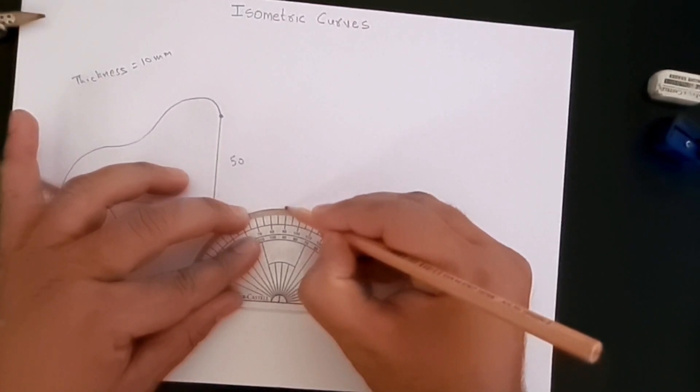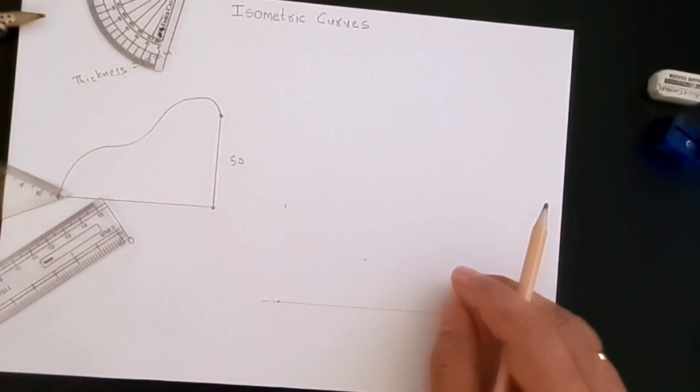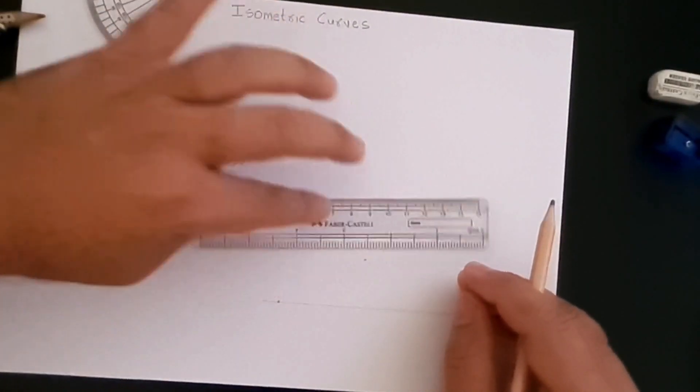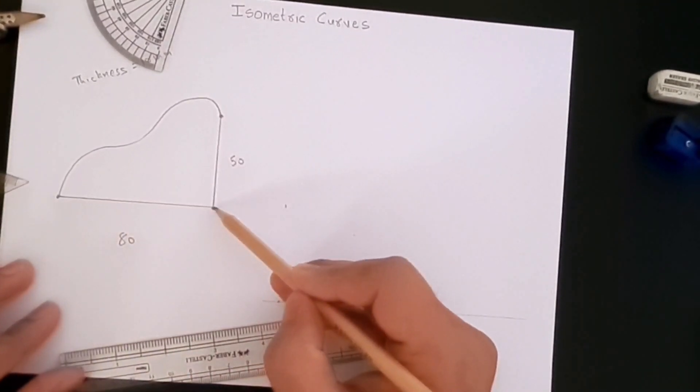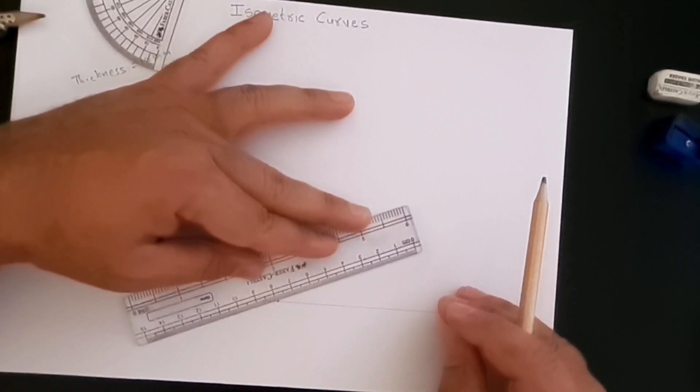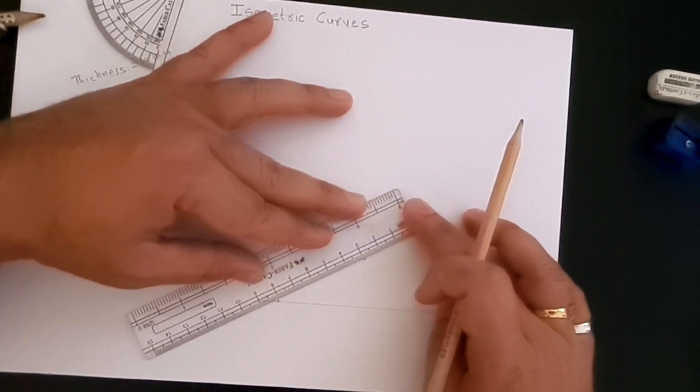Now here we know that this length is 80, so let's create a line which is 80 millimeters at 30 degrees.